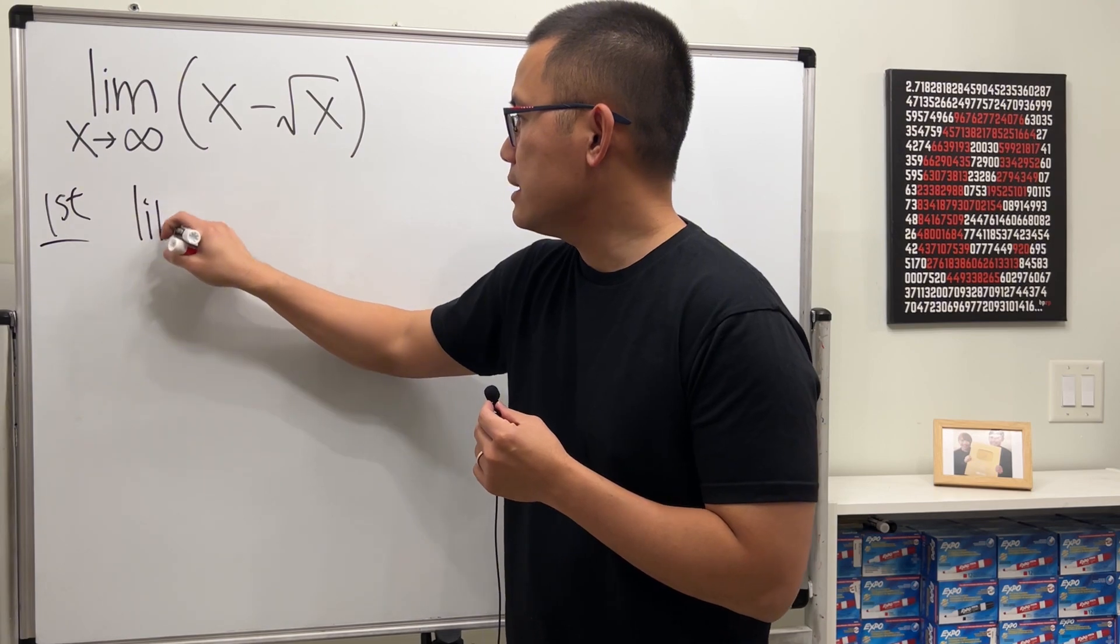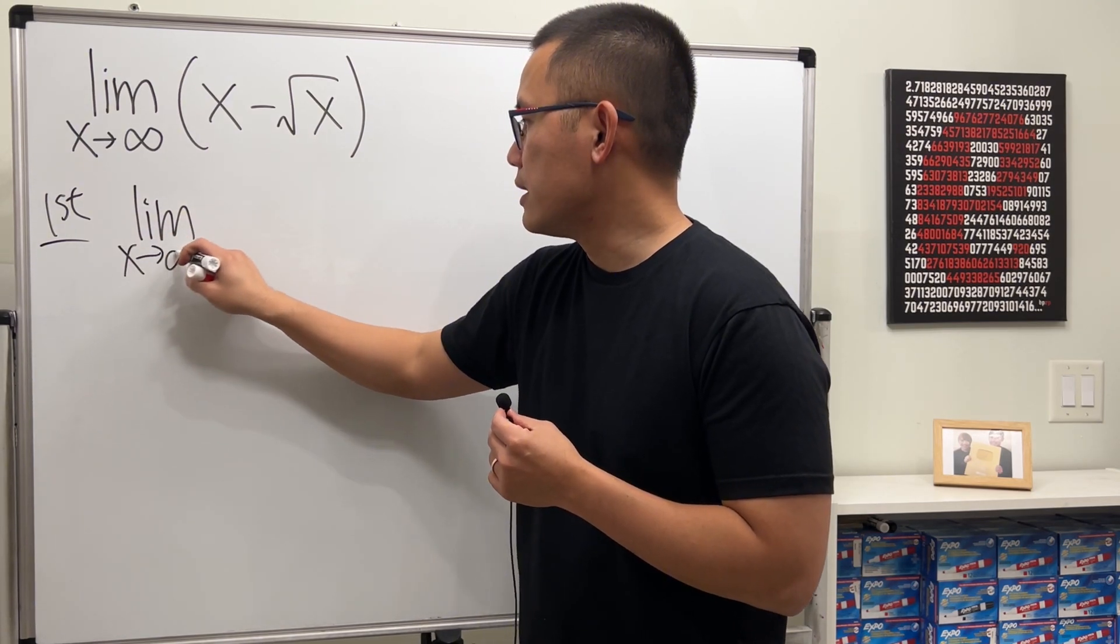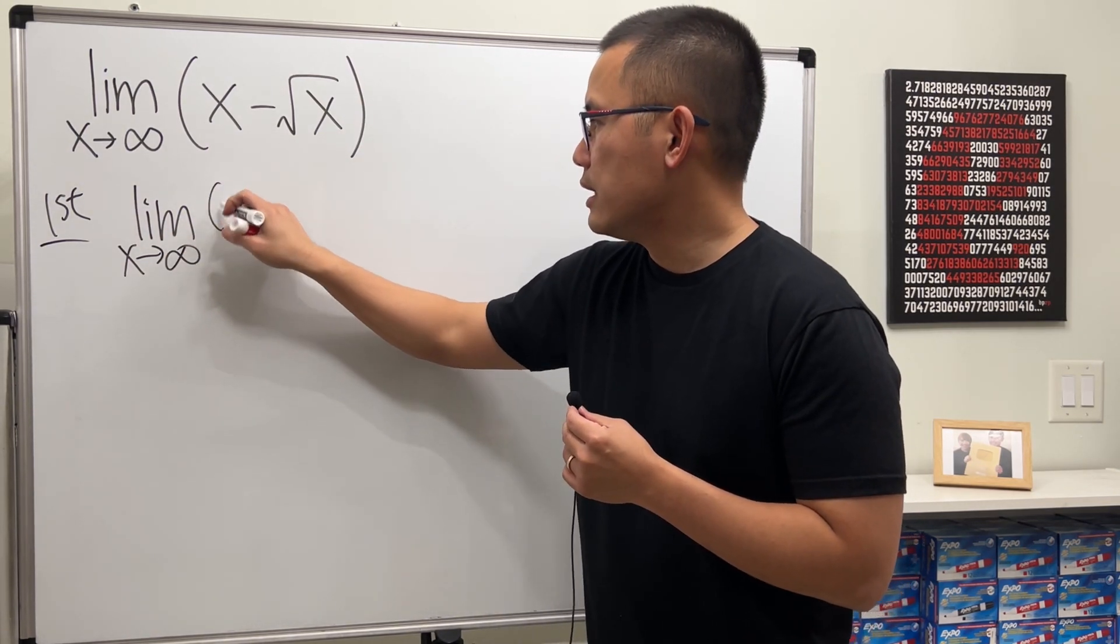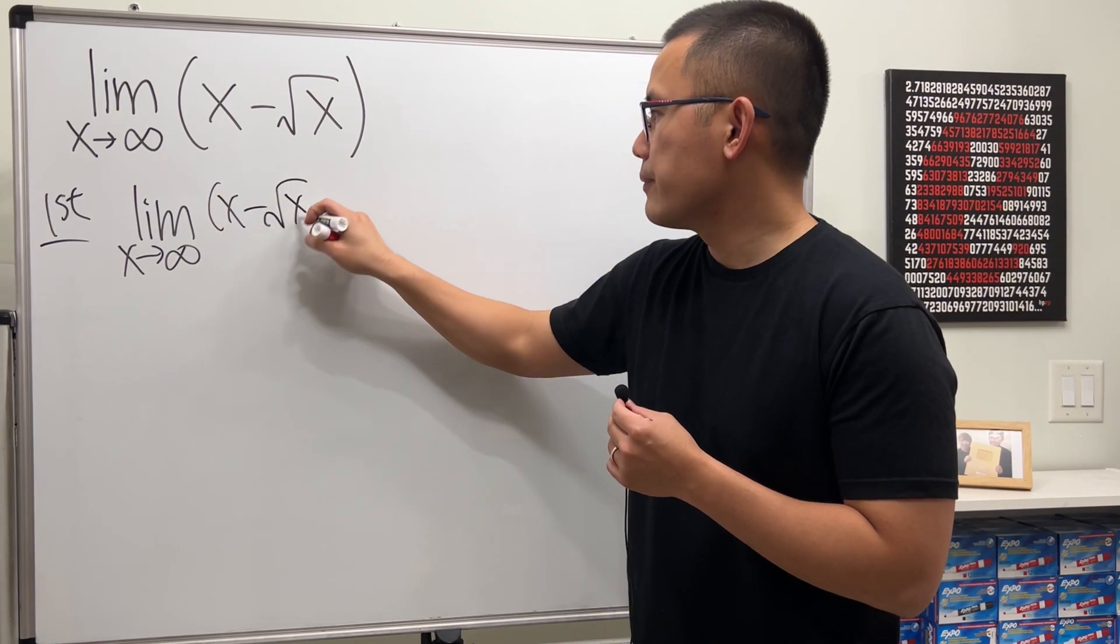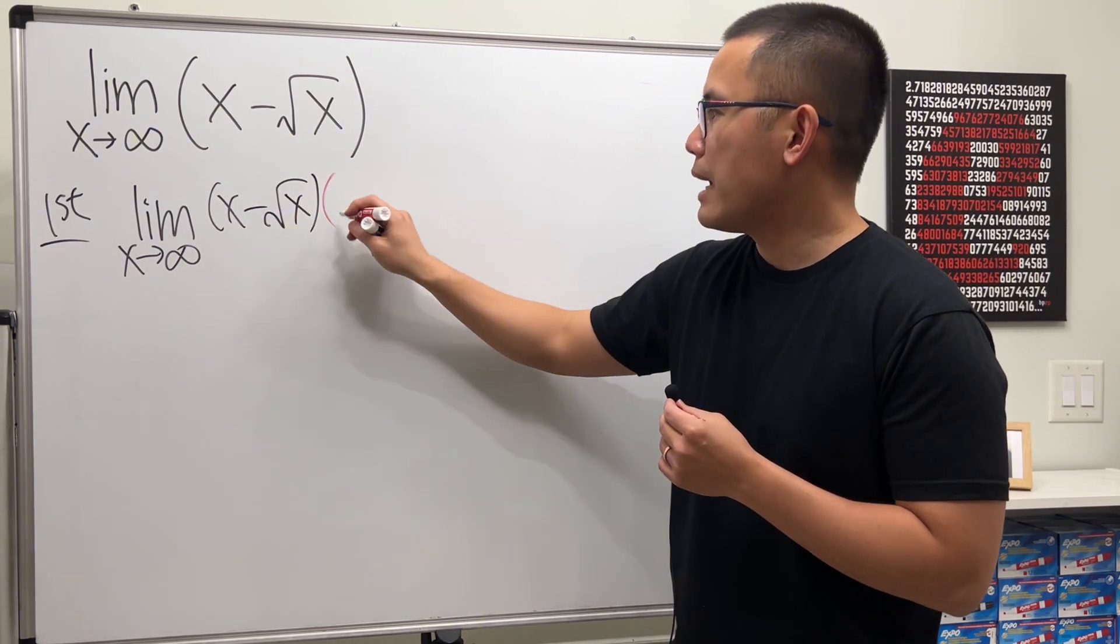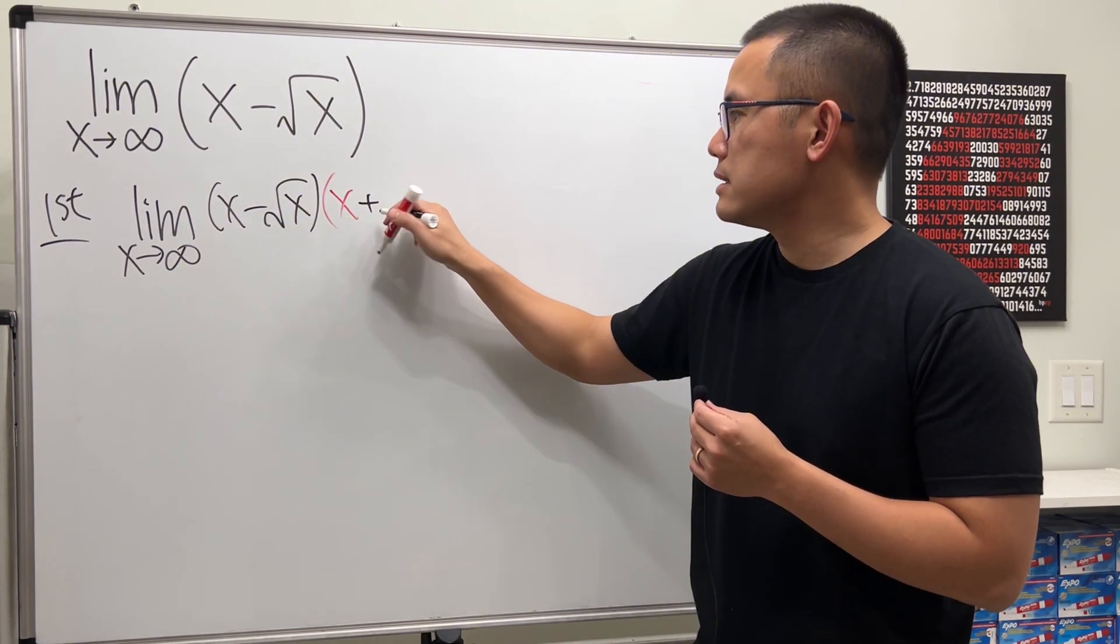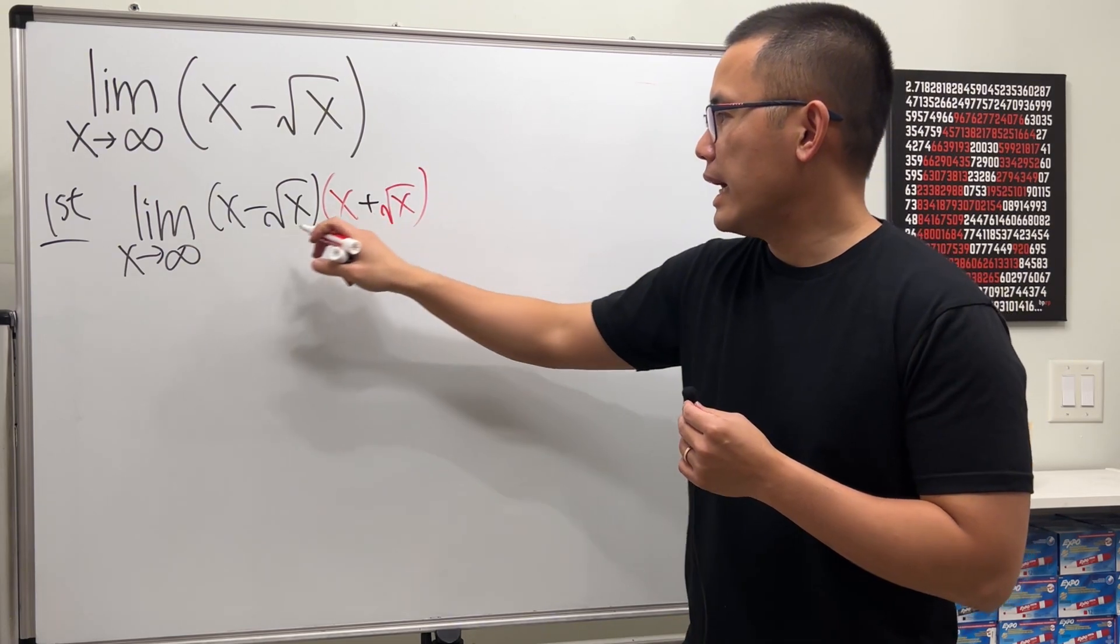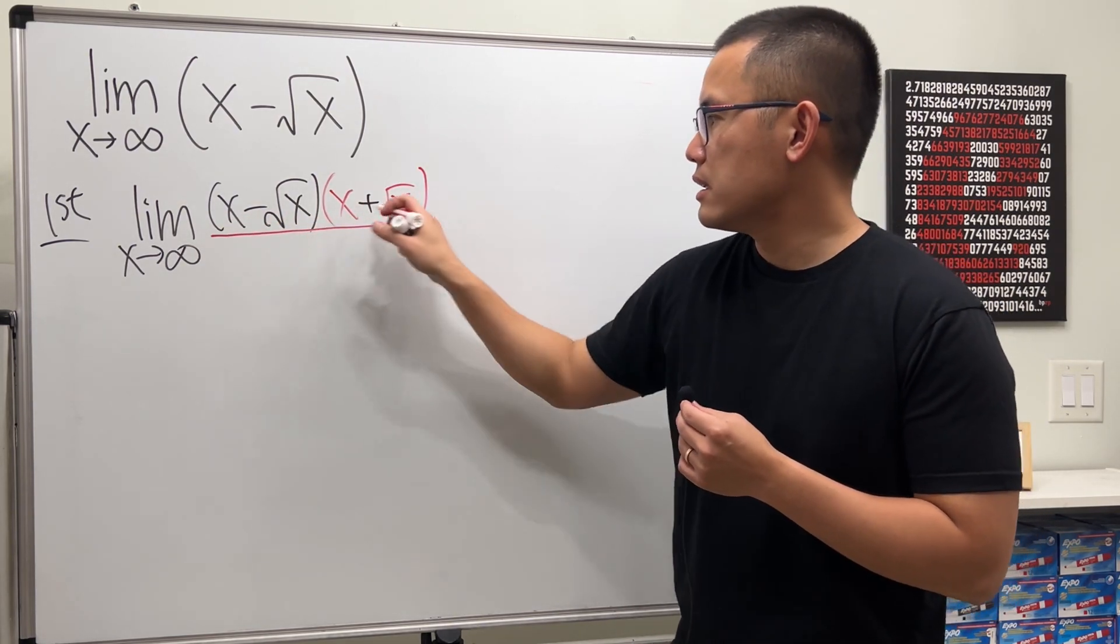So the first method is that we look at the limit as x approaching infinity and this is x minus square root of x. Let me multiply the top by x plus square root of x and then of course divide by this right here.